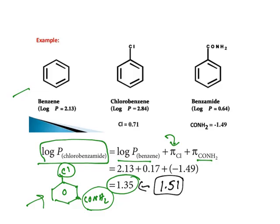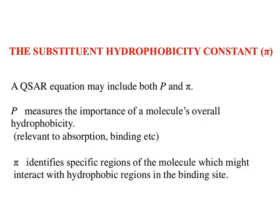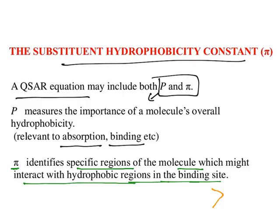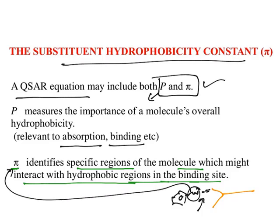The QSAR equation may include both P (the whole molecule value, important for absorption and binding) and pi (the substituent value, identifying a specific region of the molecule that may interact with hydrophobic regions in the binding site). In receptors, a particular functional group of the drug forms a bond — so both parameters are very important.